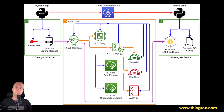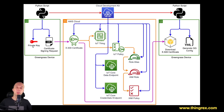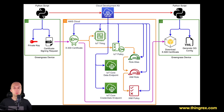This is the first Python script. It generates the private key. The private key is extremely important and should be handled with care. Whenever possible, you should generate the private key on the device that's going to use it, and you should not share it with anyone else. In order to obtain a certificate related to this private key, we are going to use the CSR — the Certificate Signing Request. So this Python script generates the private key and the CSR.